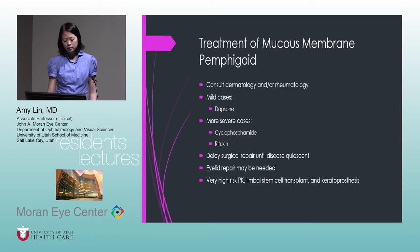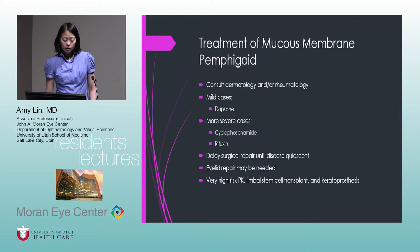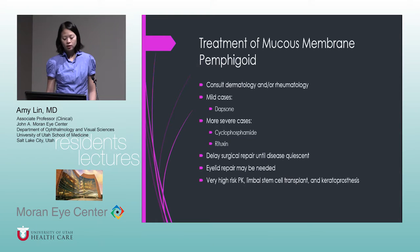Eyelid repair is often needed. These patients don't do well with transplants. They may need limbal stem cell transplant, and even then they don't do well. They might need a keratoprosthesis, and those also have a high rate of failure.